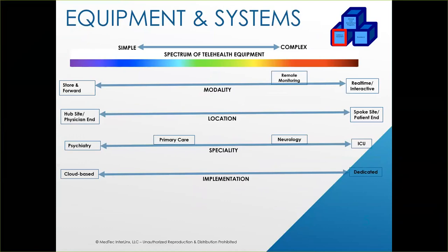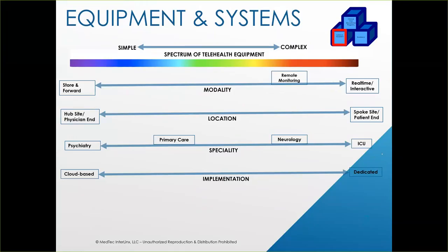Once we're done with broadband, we talk about equipment and systems. Telehealth is a technology-intensive program, and you have to have the right equipment and systems alongside broadband. I want to focus on four areas of equipment and systems as they pertain to program development: modality, location, specialty, and implementation. All of these components go from simple to complex on a spectrum.